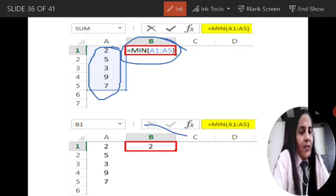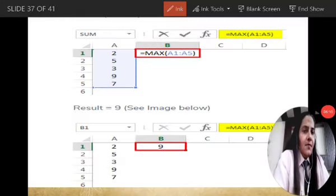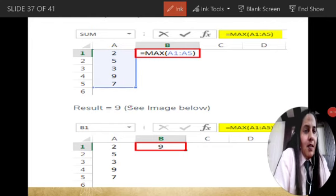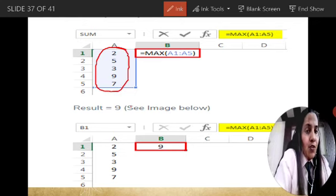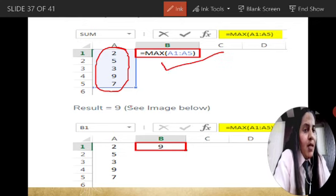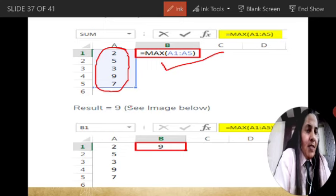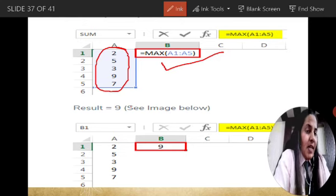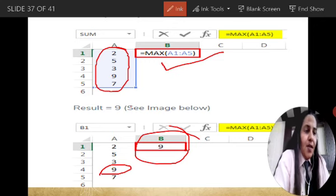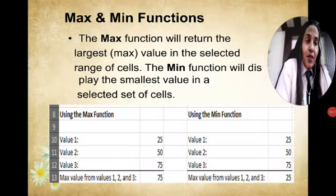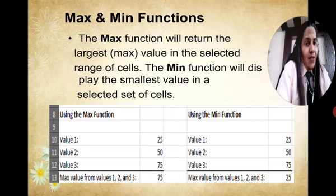Our answer for the minimum value will be 2, because the MIN function gives us the minimum value of that particular range. After that, the MAX function gives us the maximum value in a particular range. If we want to calculate the maximum value in the range A1 to A5 and apply the MAX formula, after pressing Enter the result will come out as 9 — the highest value in the selected range.